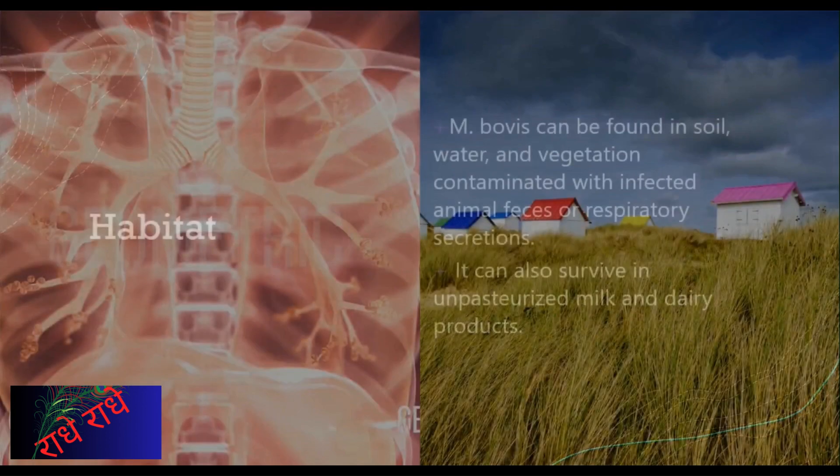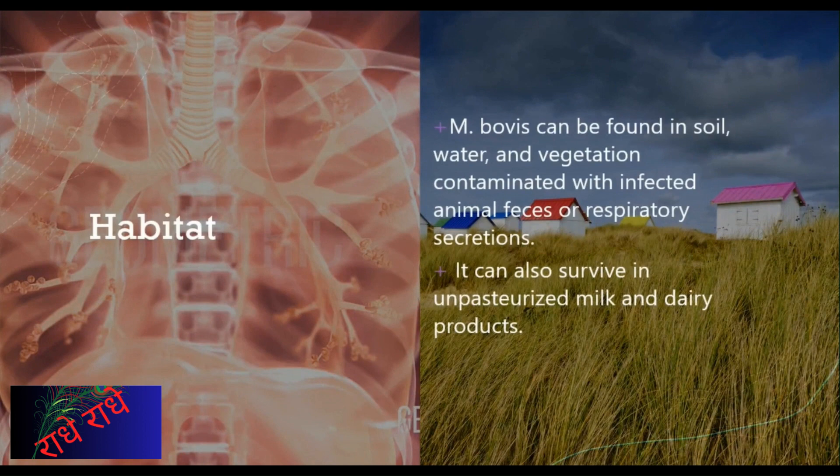M. bovis is a bacterium that is present in the environment, typically in soil, water, or vegetation contaminated by animal feces or respiratory secretions. It is also able to survive in unpasteurized milk and dairy products, making it important to be aware of the potential risks of consuming food and drink that has not been adequately prepared.